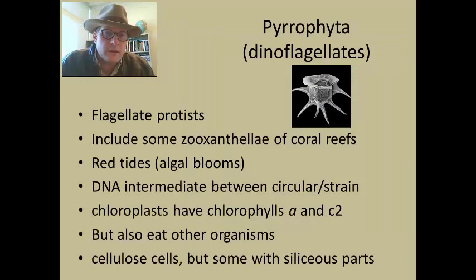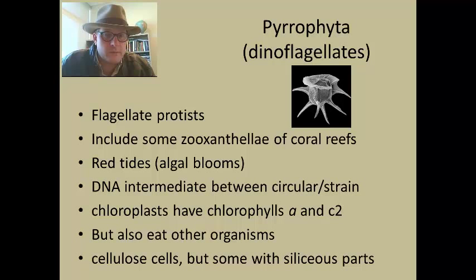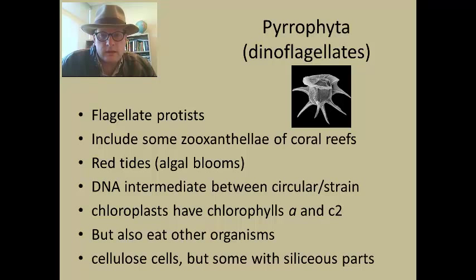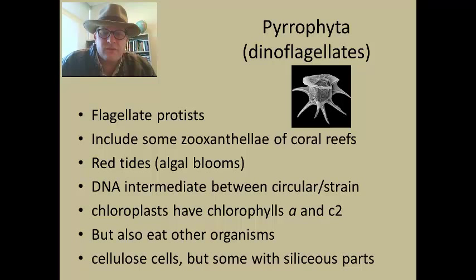The next group are the Pyrophyta — the dinoflagellates, sometimes referred to as dinocysts. These are flagellated protists that have flagella and move around. They include some groups that are zooxanthellae, meaning they are in a symbiotic relationship with cnidarian corals. The corals harbor them, the dinoflagellates photosynthesize within the coral and the corals feed on them. Dinoflagellates are also responsible for the red tides you may have heard about. The dinoflagellates have a very complicated DNA structure, intermediate between the circular structure of prokaryotes and the strand-like characteristics of many plants and animals.